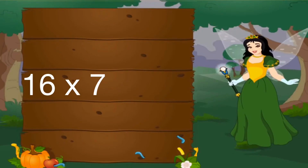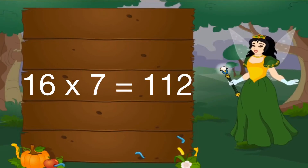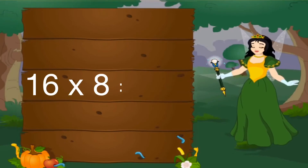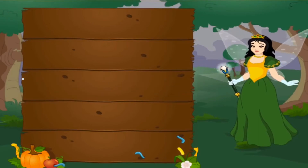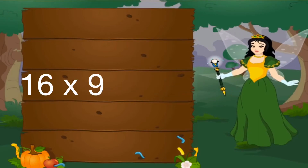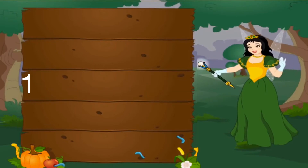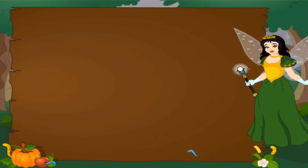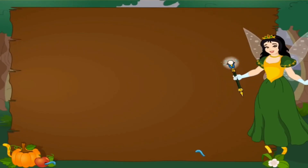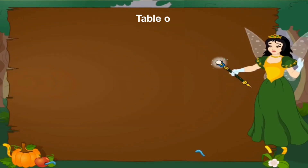16 sevens are 112, 16 eights are 128, 16 nines are 144, 16 tens are 160. Let's revise table of 16.